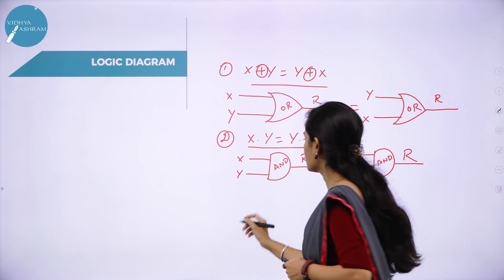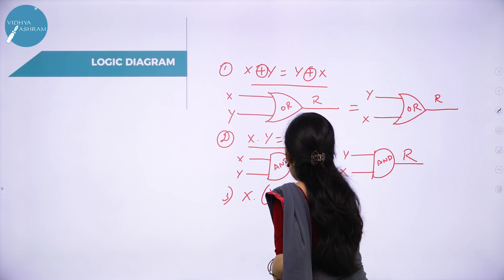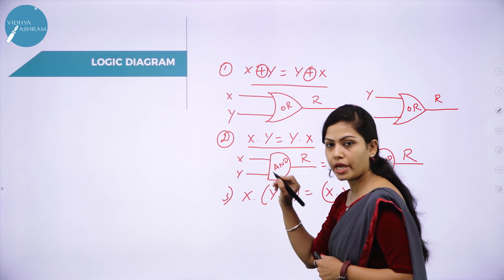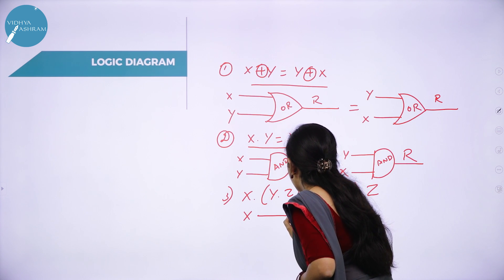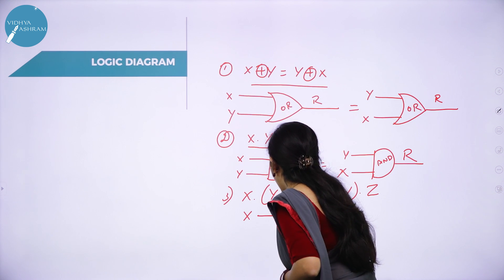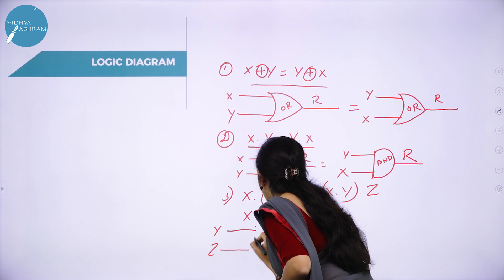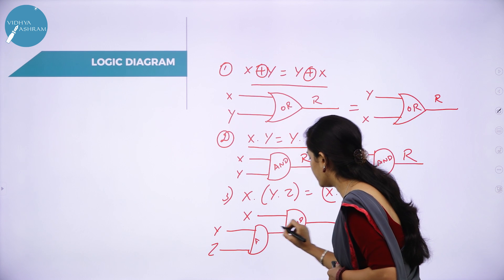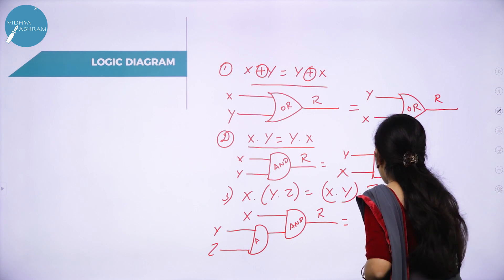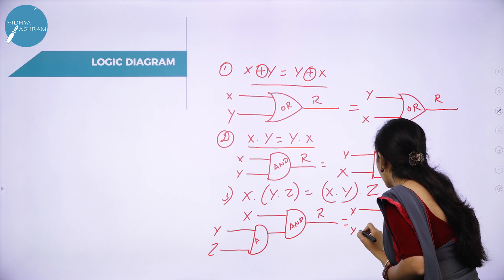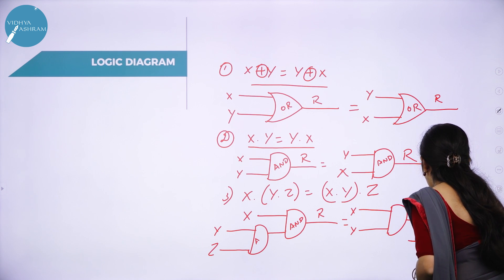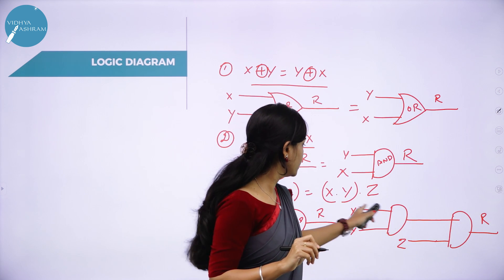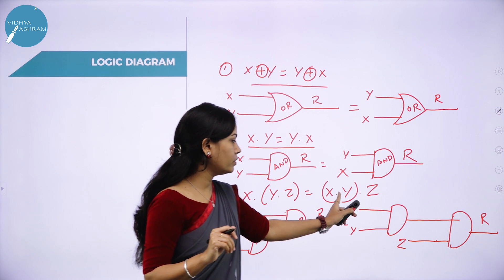Next equation: x·y·z = (x·y)·z. Here we have three variables. x is anded with y, and then anded with z, using two AND gates. R signifies the result. On the right side, x·y·z is shown with two AND gates similarly.